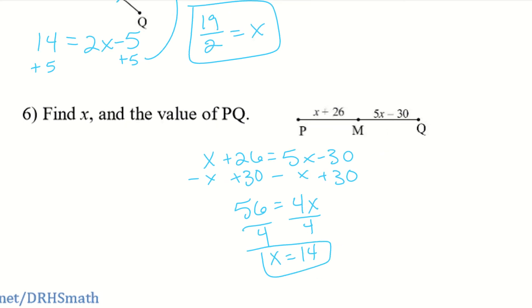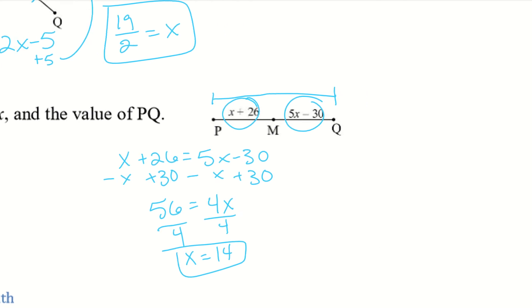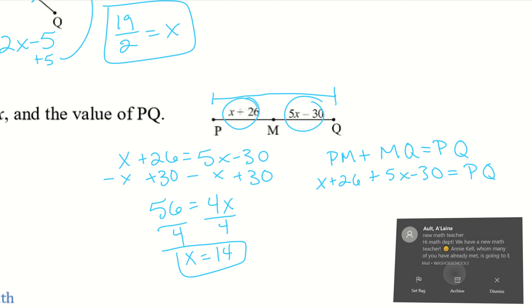Okay, so we know that X equals 14. Now I'm going to find PQ. So that's this entire line. The nice thing, since I know that this half has to equal this half, I can just add one side together twice. Or if we continue with our segment addition, where we have PM plus MQ equals PQ. So that'll always work. The part plus the other part will give you the whole thing. So PM equals X plus 26. And then MQ is 5X minus 30. And we're trying to find PQ, so it's okay that that stays there.